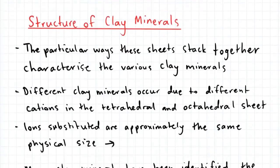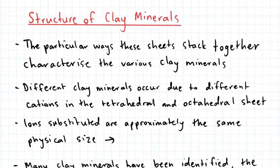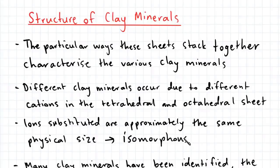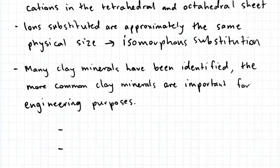Now let's talk about the structure of clay minerals. The different ways these sheets are stacked can form different clay minerals, and having different cations in the tetrahedral or octahedral sheet can also result in different clay minerals. The cations which are substituted in the sheets are approximately the same size — this is known as isomorphous substitution. There have been many clay minerals identified, but the most common ones are the most important to engineering.